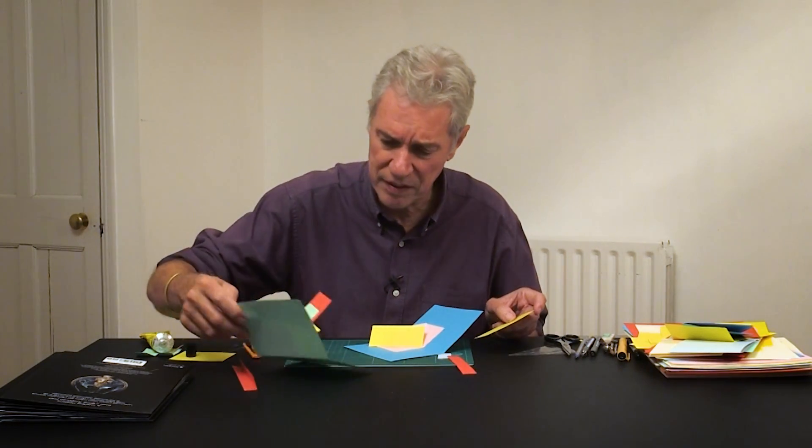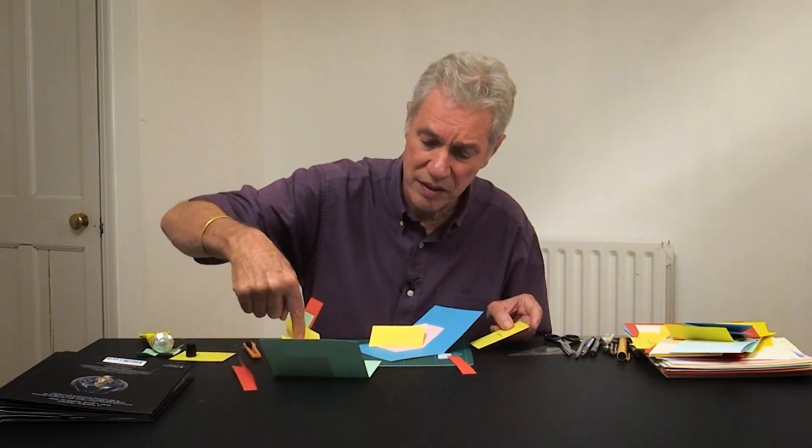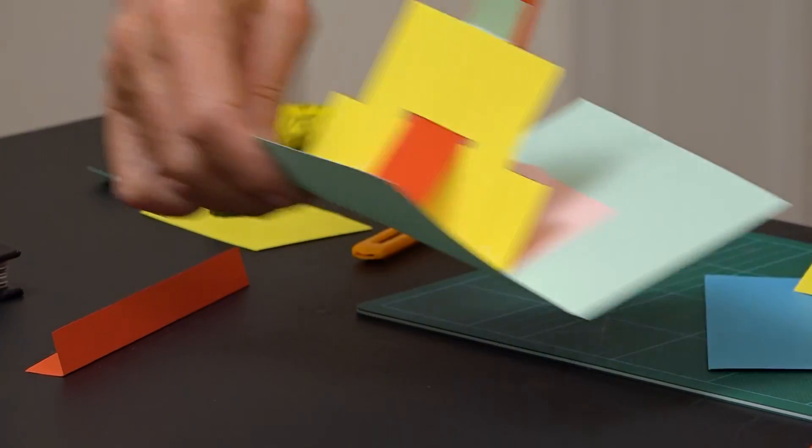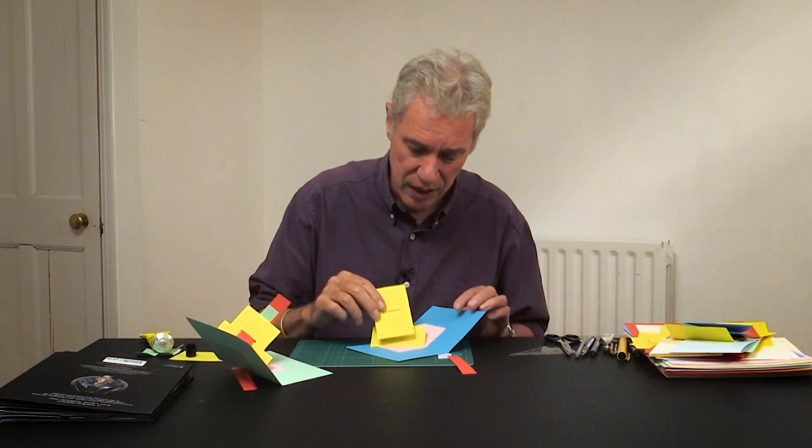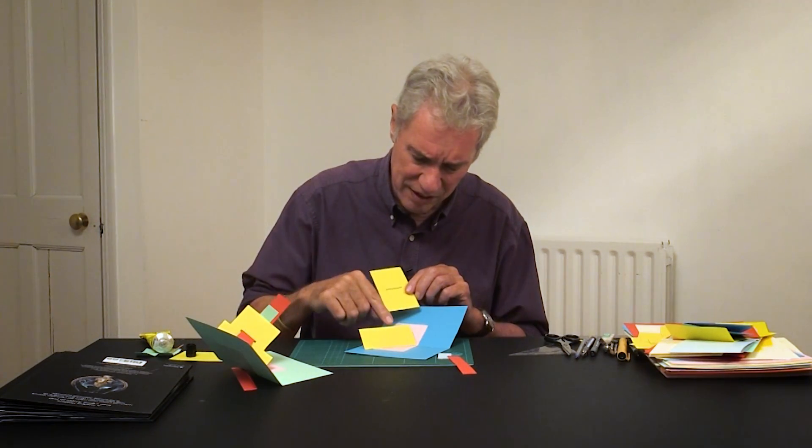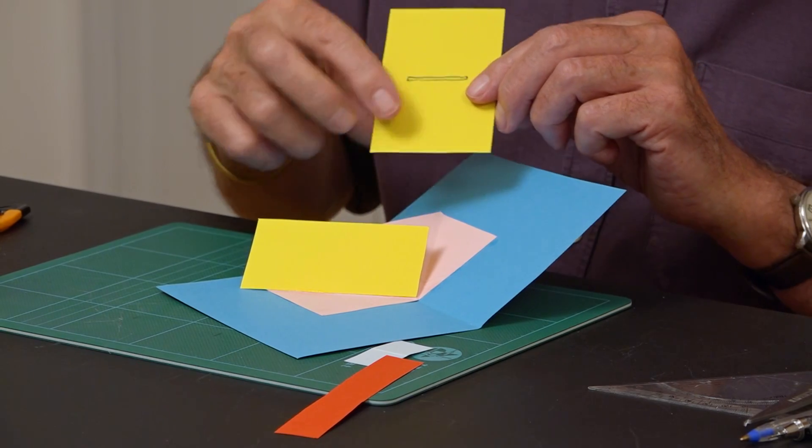Now the second piece, this is the piece here with the slot in it that the red piece goes through. So that's going to go on here. The slot is going to be just above the level here.